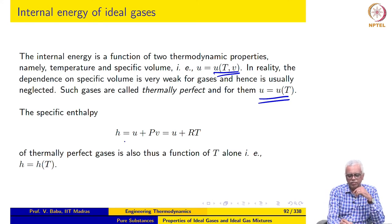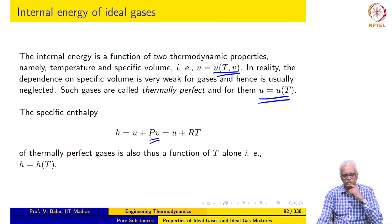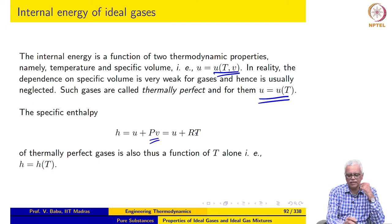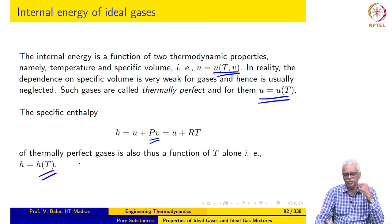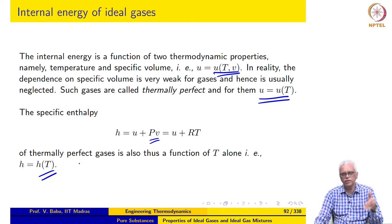The specific enthalpy is h = u + PV. Substituting for PV from the ideal gas equation of state, we get h = u + RT. This tells us that for a thermally perfect gas, the enthalpy is also a function of temperature T alone. So both the specific internal energy and the specific enthalpy are functions of temperature alone.